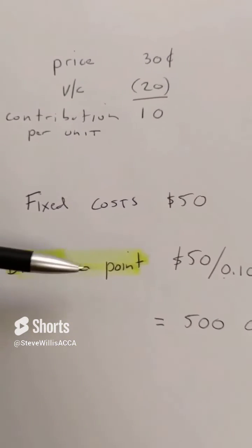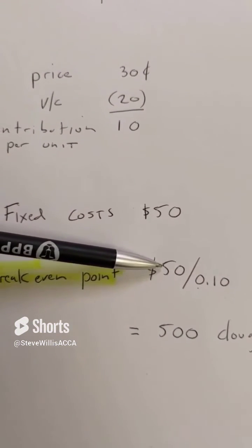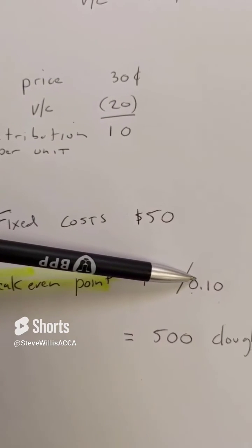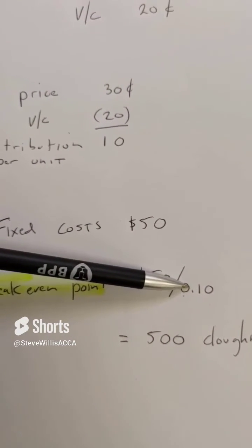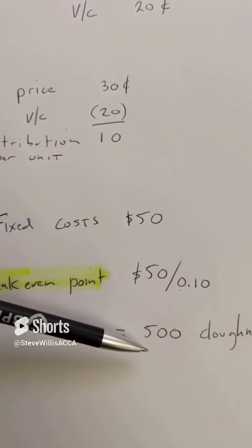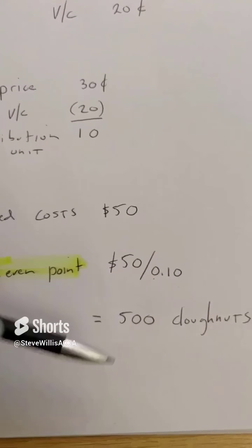Break-even point: fixed costs divided by the contribution per unit. How many donuts do I need to sell to cover my fixed costs? That's the key for the question.